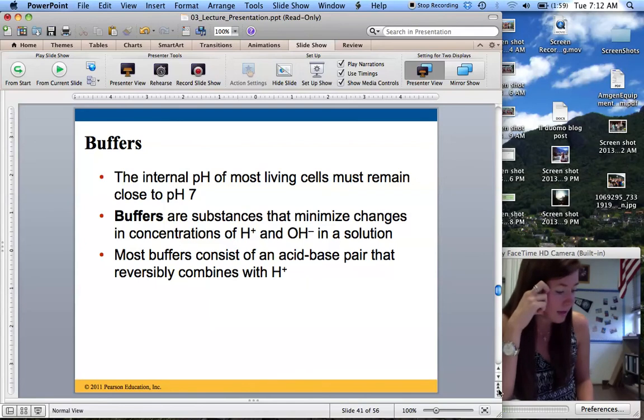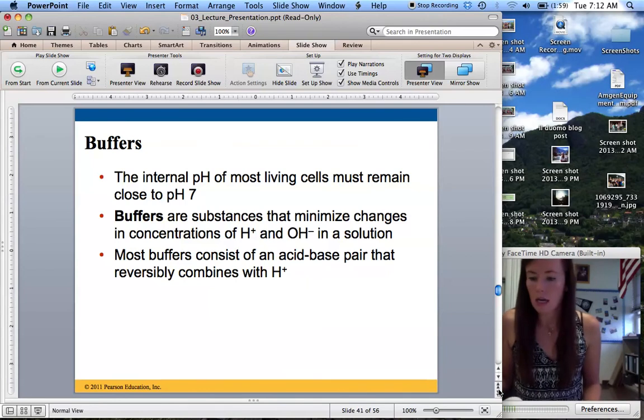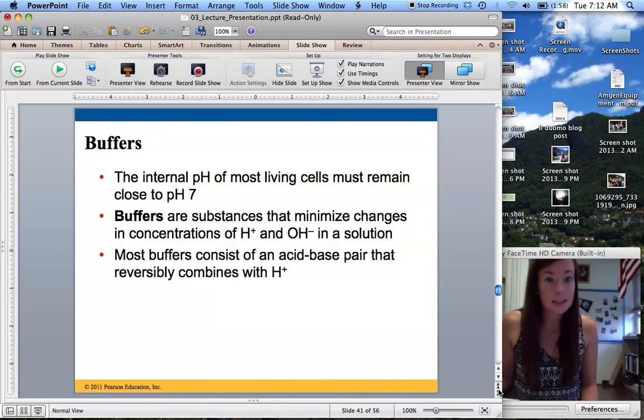So inside your blood, it's called carbonic acid. And the equation of carbonic acid is H2CO3. And this can accept hydrogen ions. And so then it becomes,